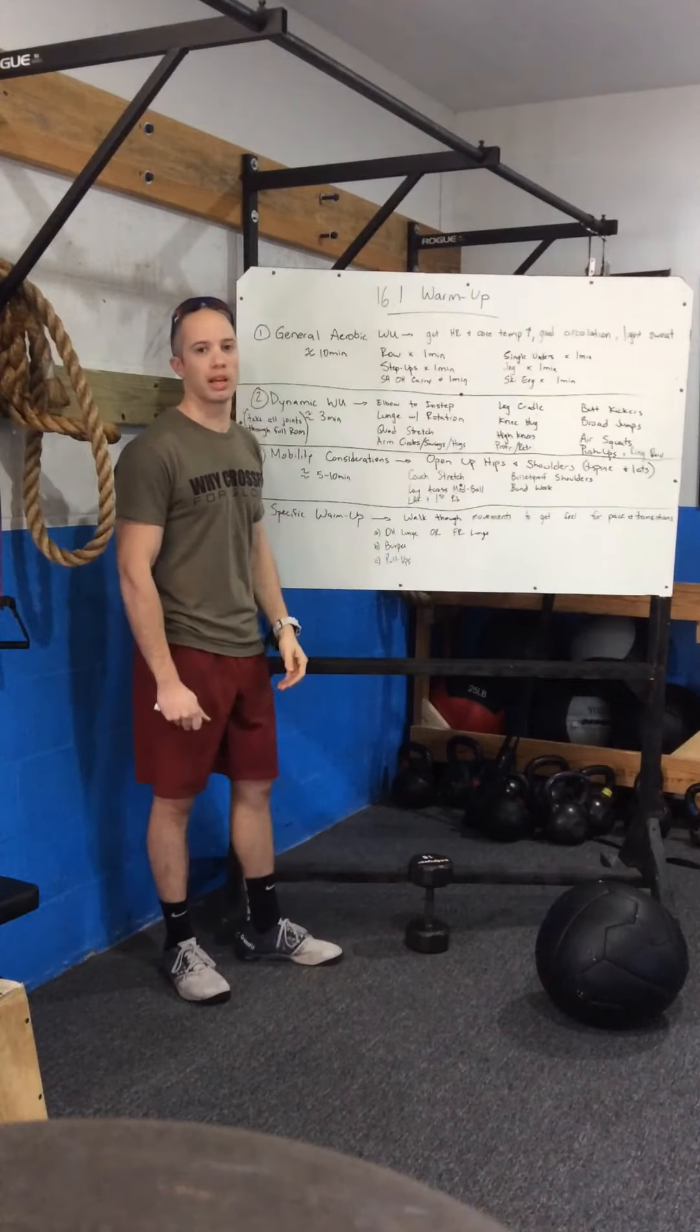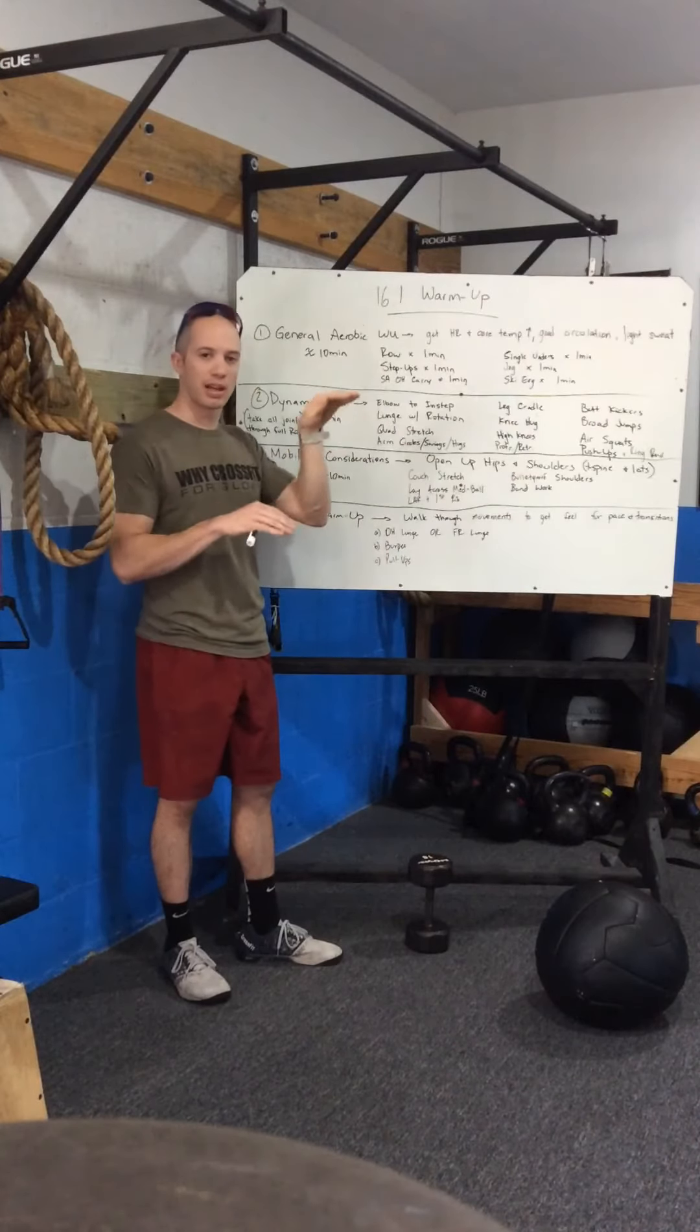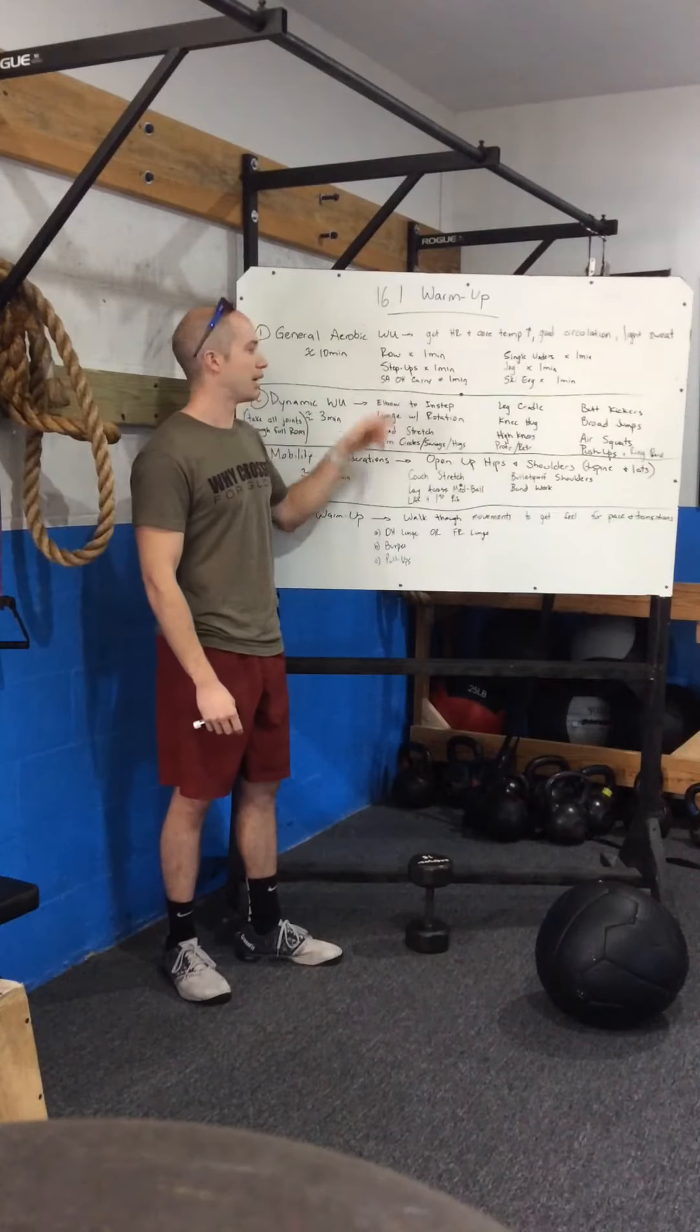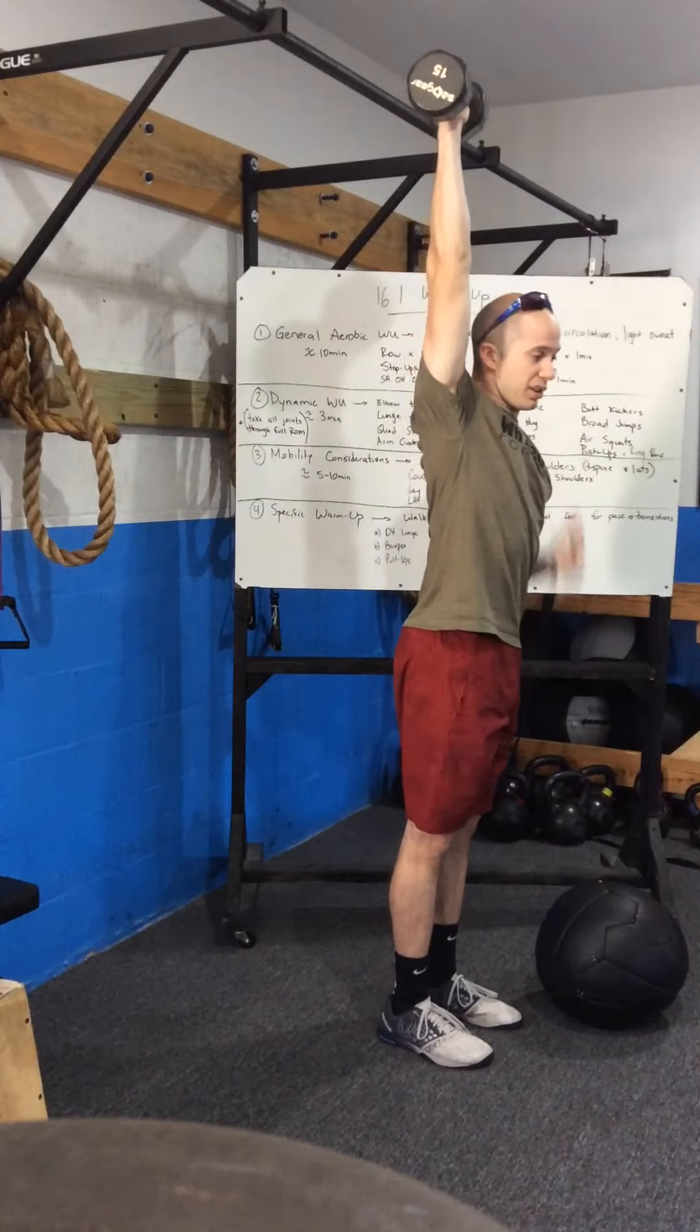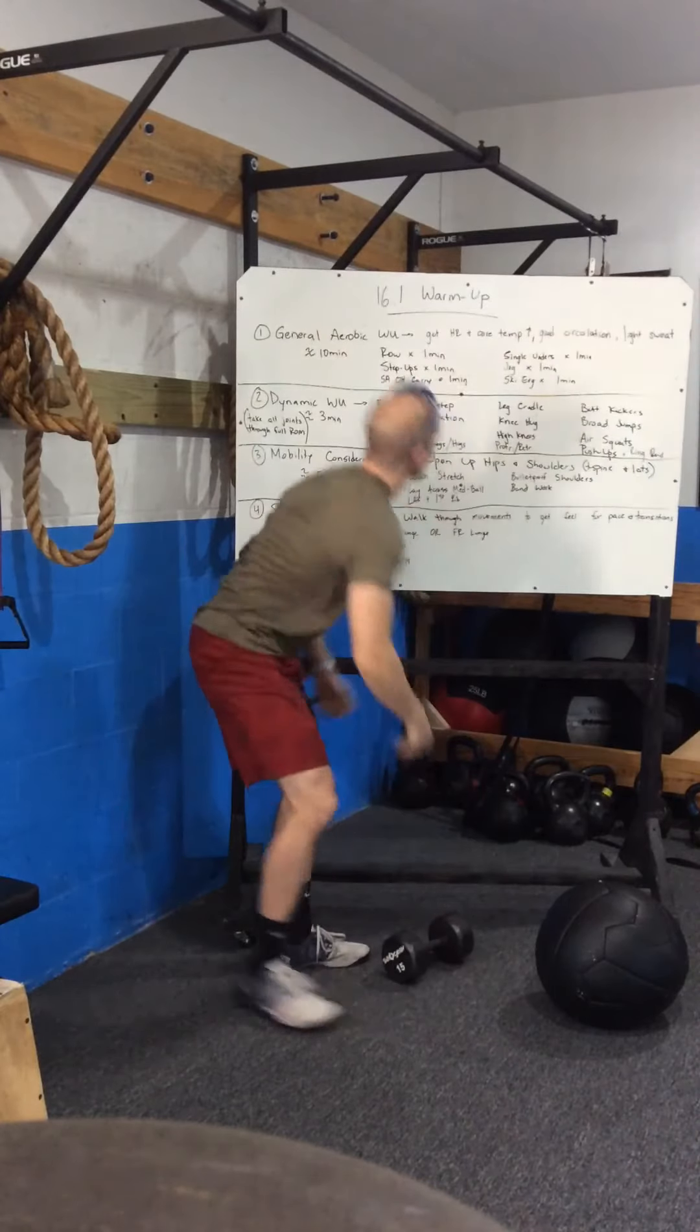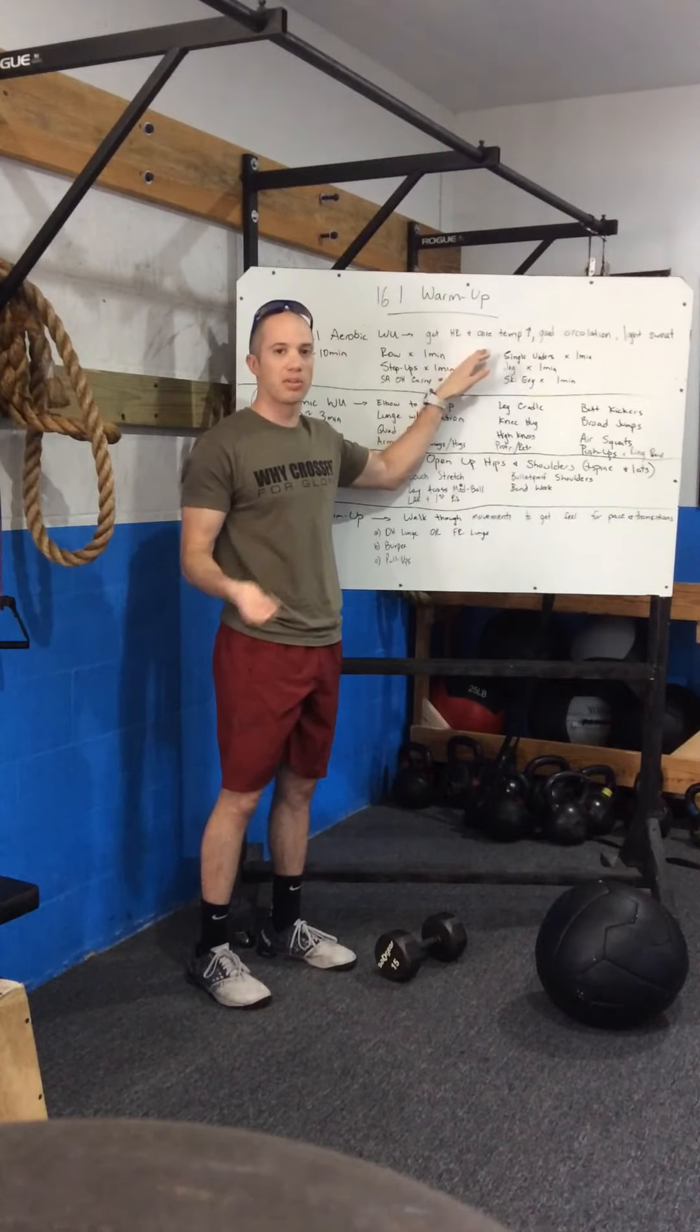These are just some general suggestions in terms of what you can do for a very light, good aerobic warm-up: row for a minute, step-ups to a small box or bench for a minute, single arm overhead carries—so literally pick up a very light dumbbell, lock the arm out, walk back and forth for a minute, switch arms at the halfway mark.